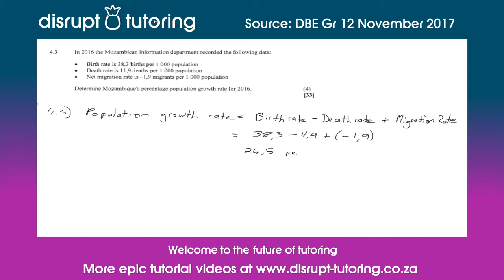So we need to get this as a percentage. We know that it's 24.5 per thousand, so that's divided by a thousand — meaning the population grows by 24.5 per thousand people in the country. But since they need it as a percentage, we multiply by 100. Putting this into your calculator, we get that it is 2.45 percent, and that is the final answer.